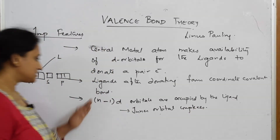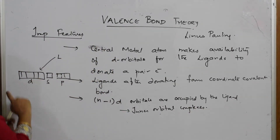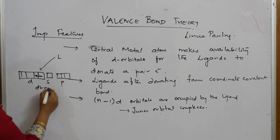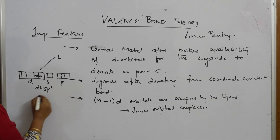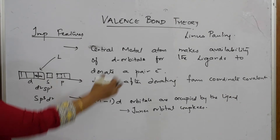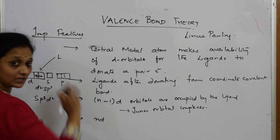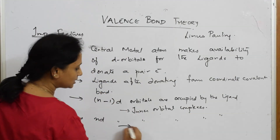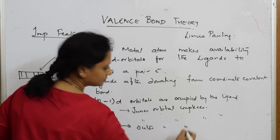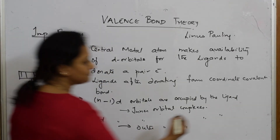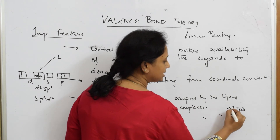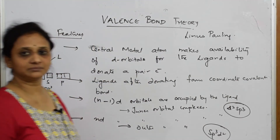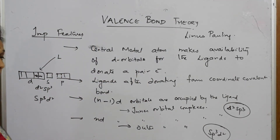Suppose the ligand is occupying towards the outer end. If the nd outer orbitals are occupied by the ligand, then I call it as outer orbital complexes. For example, sp³d² is an outer orbital complex, because the d orbitals used are the outer nd orbitals. So d²sp³ is inner orbital and sp³d² is outer orbital.